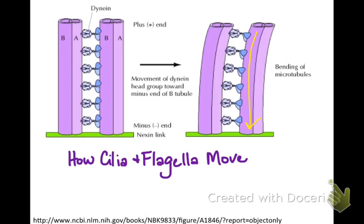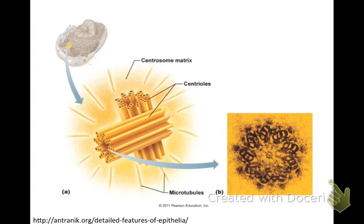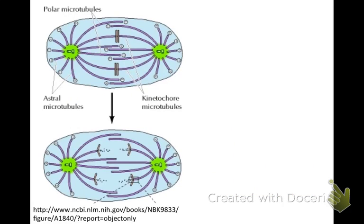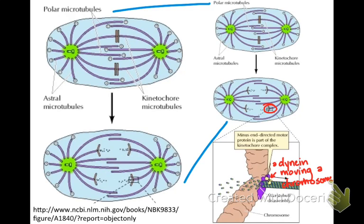So microtubules are involved in moving organelles and in forming cilia and flagella. Finally, centrioles are formed by a ring of nine triple microtubules. They stabilize microtubules so that microtubules can attach to chromosomes and pull them apart during cell division. You can see the microtubules attaching to chromosomes, pushing each other apart and lengthening the cell. The dynein is actually attached to the chromosome and is pulling it toward the end of the cell — so microtubules are extremely important to cell division.